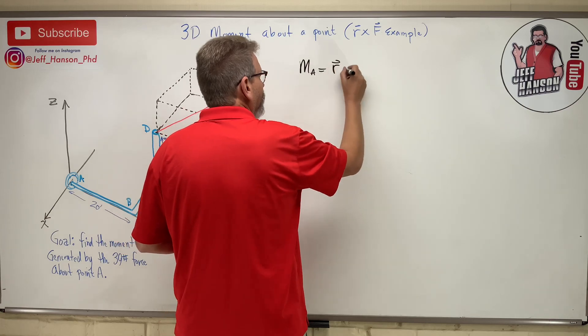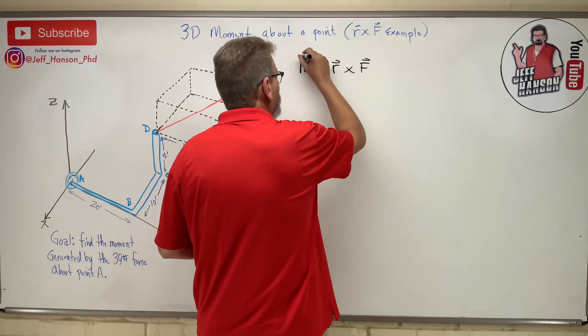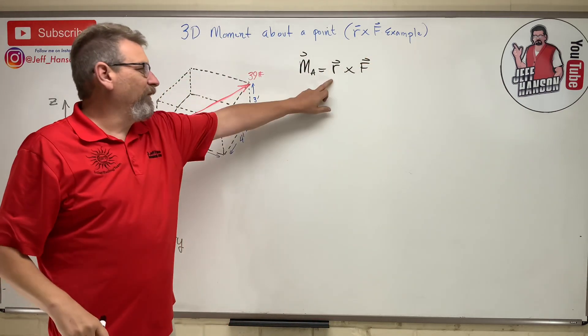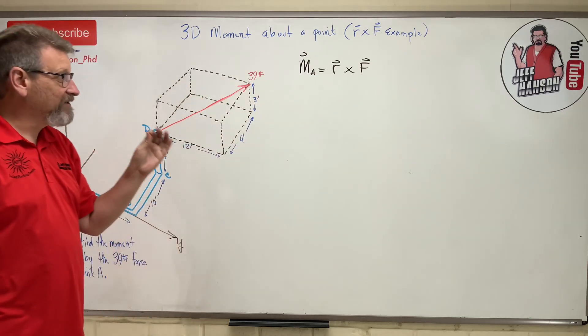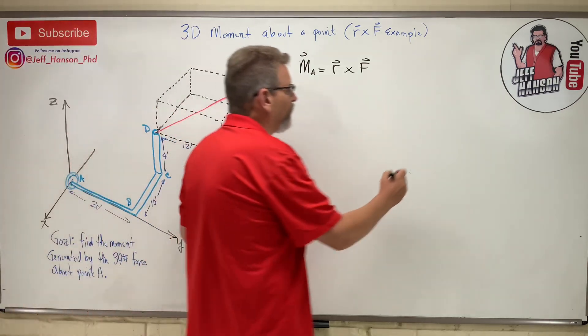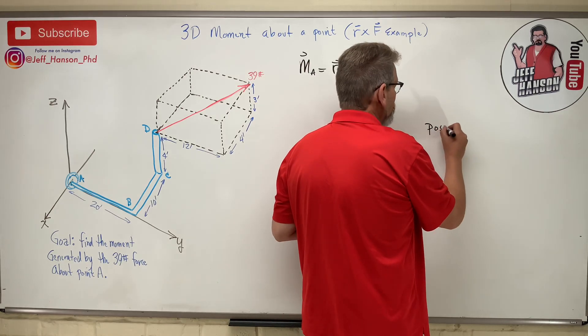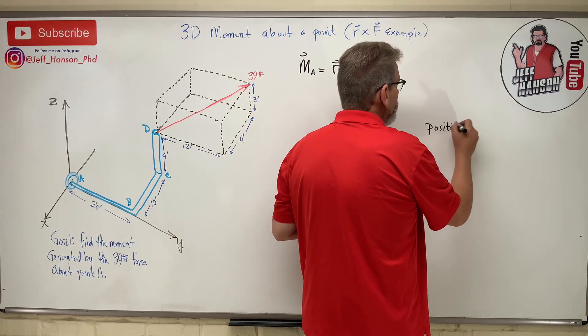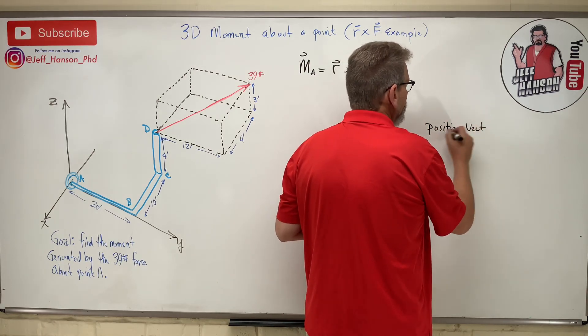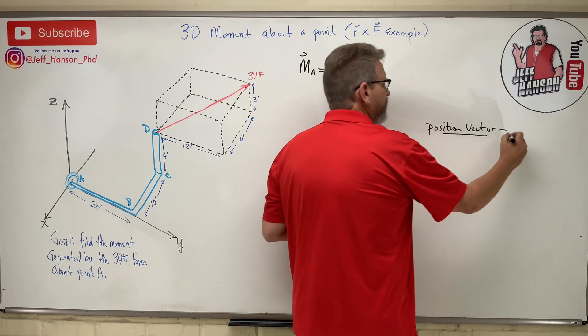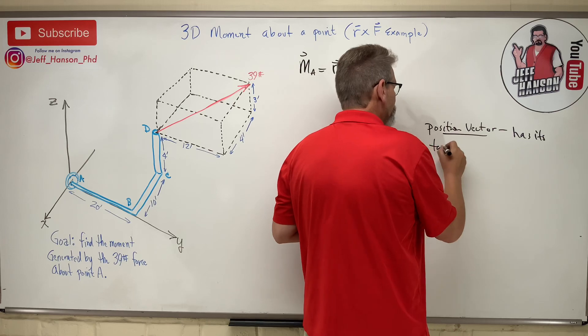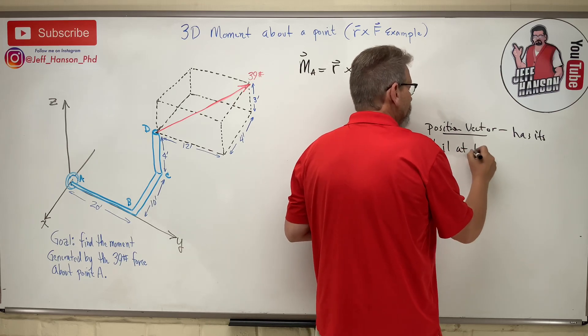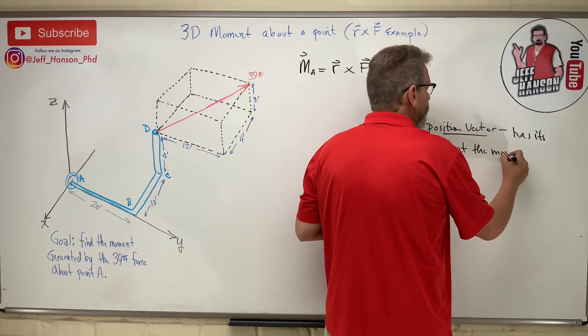So moment about point A equals r cross F. What's r again? r is called the position vector. I'm going to write this down for you again: position vector. And a position vector has its tail at the moment point.